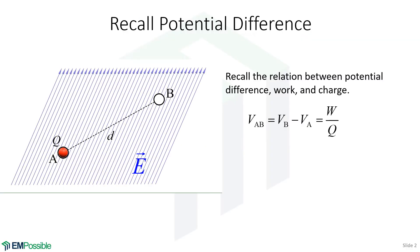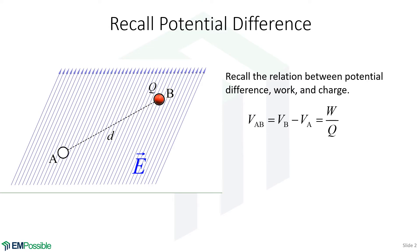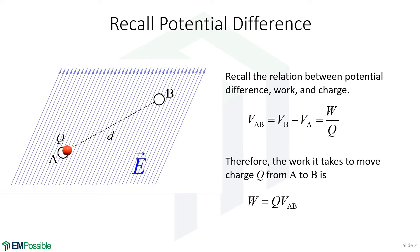Energy and electric potential. Recall the relationship between potential difference, work, and charge. If we have two points A and B present in some electric field, they are at different potentials, so there's a potential difference between them. If we move a charge from point A to point B, it takes a certain amount of work. Work divided by charge gives the potential difference. Equivalently, work equals charge times the potential difference between those two points. Remember this definition because it will come up again.